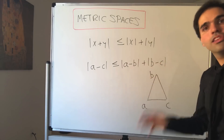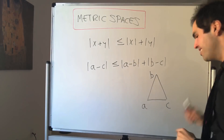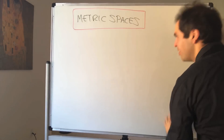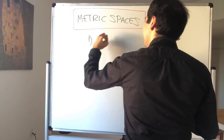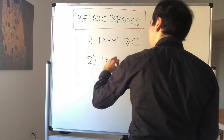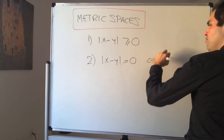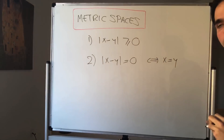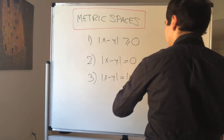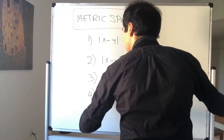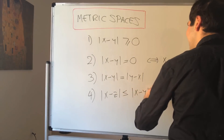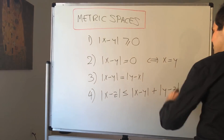Of course, we use this a lot, but there were other properties which we unconsciously used without even thinking about it. Namely: first, the distance between x and y is always non-negative. Moreover, the only way the distance between x and y is zero is if the two points are the same. Also, the distance between x and y is the same as the distance between y and x. And lastly, the triangle inequality: the distance between x and z is less than or equal to the distance between x and y plus the distance between y and z.